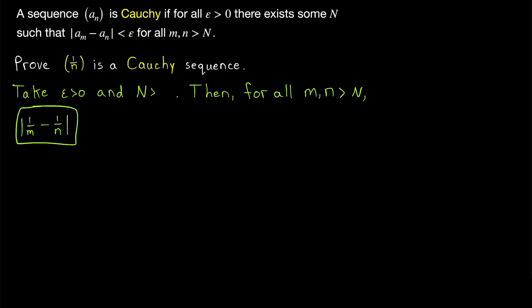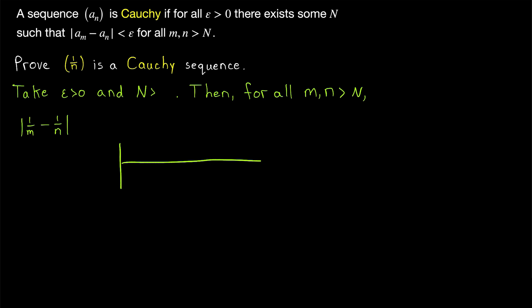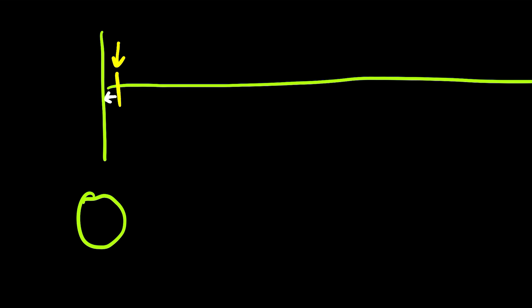Before we begin, just for some intuition — why would we think that the terms of this sequence get arbitrarily close together in the first place? Well, the sequence converges to zero. I'll leave a link to my proof of that in the description. So we could go far enough in the sequence to get as close to zero as we want. However, every term of the sequence is positive. So if we zoom in really close on a number line, and maybe zero is right here, if we go far enough in the sequence, there's barely going to be any distance between that term and all the following terms that will just be getting closer to zero. So it makes sense that this sequence would be Cauchy.